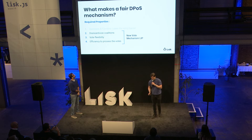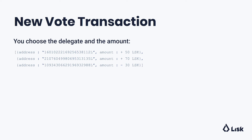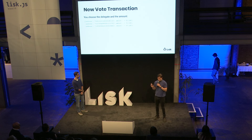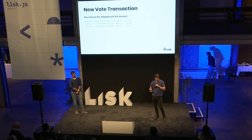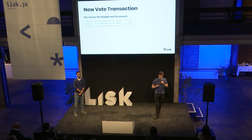At the basis of our new delegated proof-of-stake mechanism, we have a new vote transaction — you can see an example here on the screen. In this new vote transaction, you choose a delegate and an amount with which you want to support that delegate. In the last line, you can see a negative amount, which means you want to remove some support you have previously given to that delegate. In the current situation, every time you vote for a delegate, you have to vote with your full balance and cannot choose exactly how many tokens to assign to each delegate.